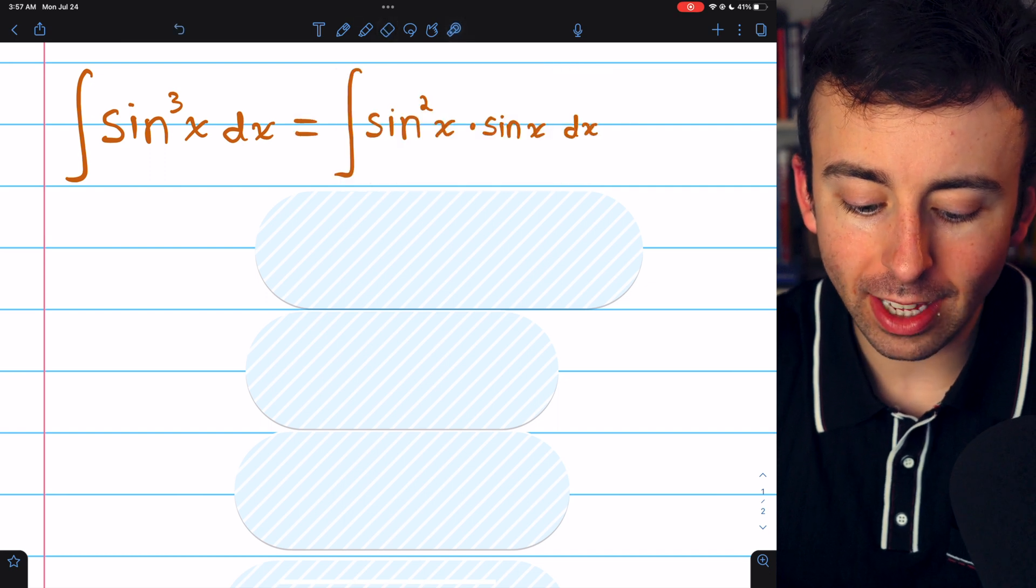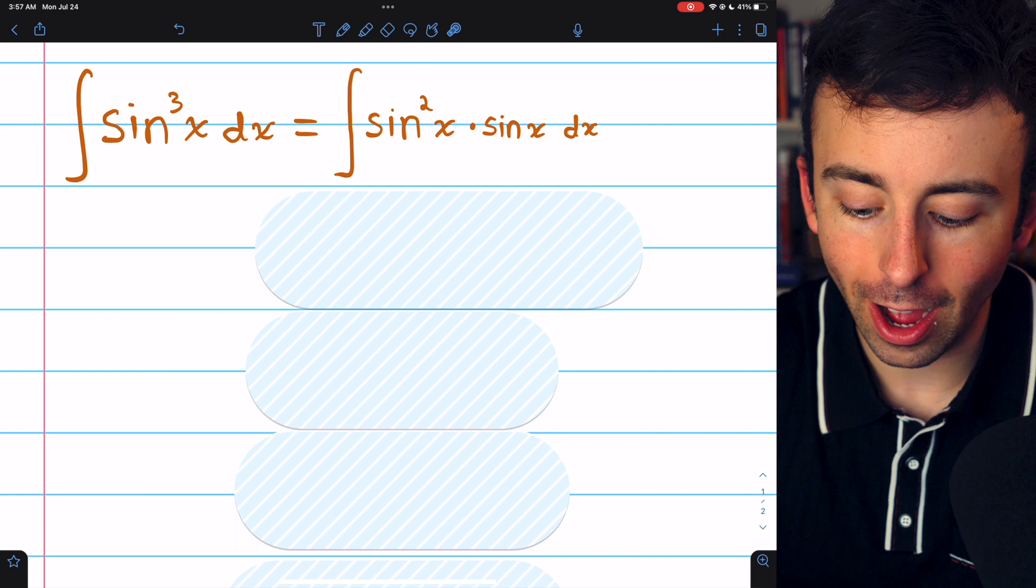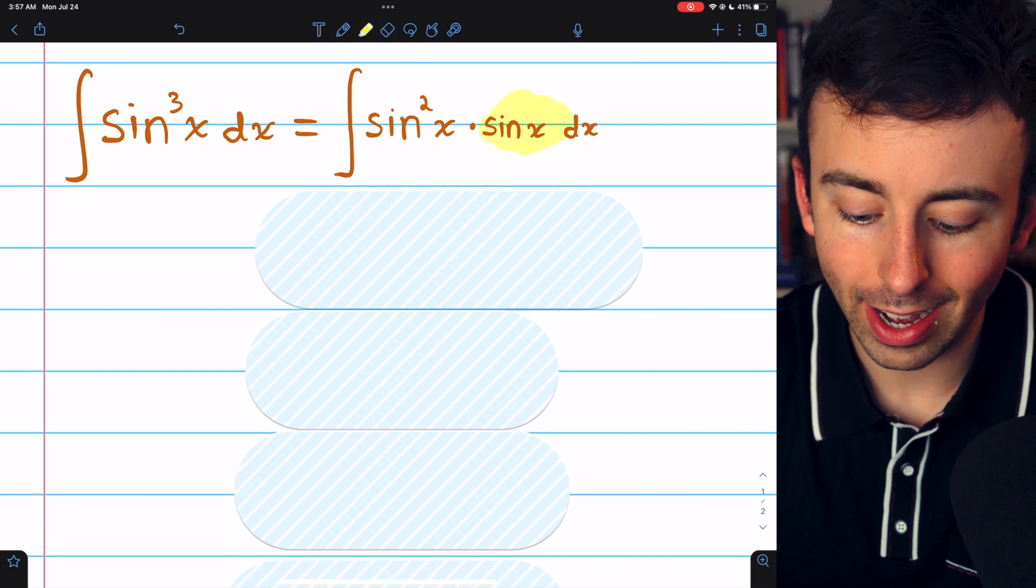Let's split sine cubed into sine squared times sine. We just took one sine out.